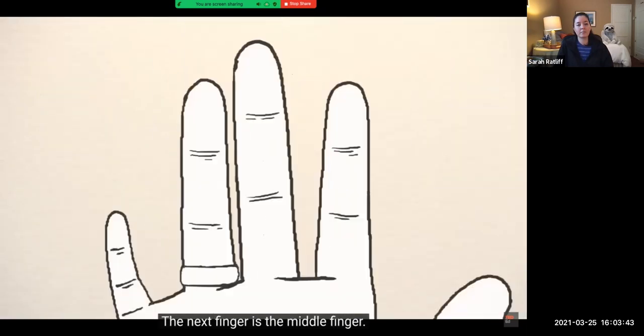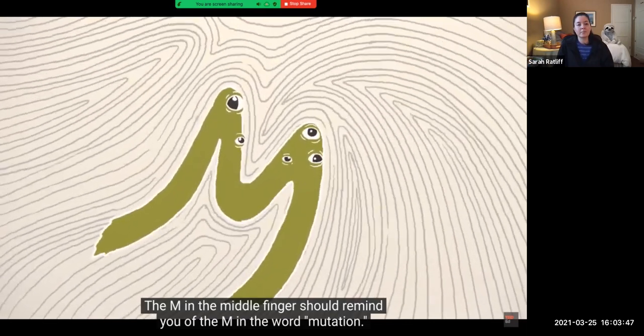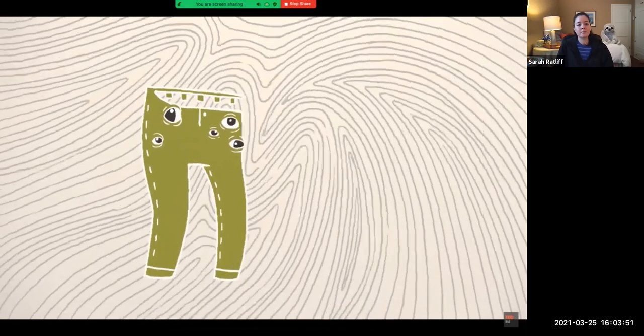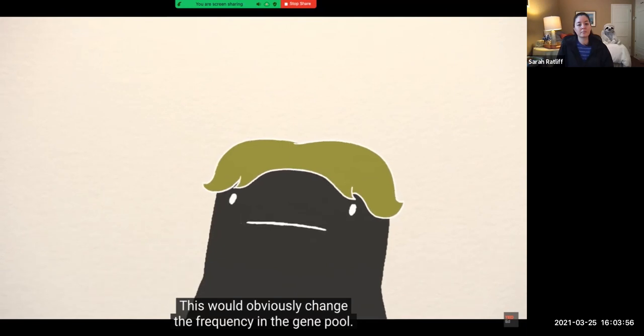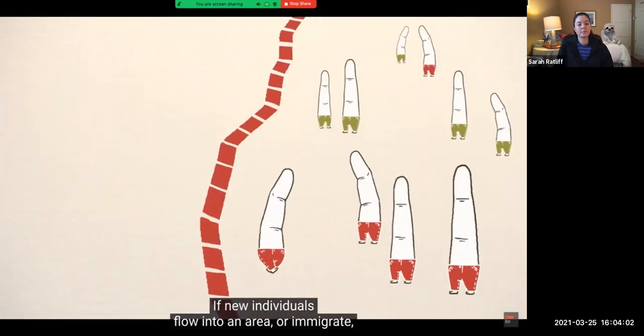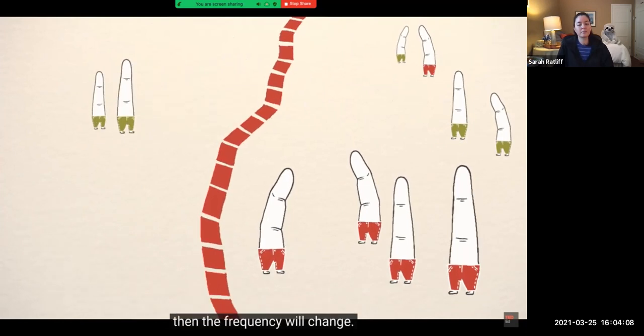The next finger is the middle finger. The M in the middle finger should remind you of the M in the word mutation. If a new gene is added through mutation, it can affect the frequency. Imagine a gene mutation creates a new color of hair. This would obviously change the frequency in the gene pool. The pointer finger should remind you of movement. If new individuals flow into an area or immigrate, the frequency will change. If individuals flow out of an area or emigrate, then the frequency will change. In science, we refer to this movement as gene flow.